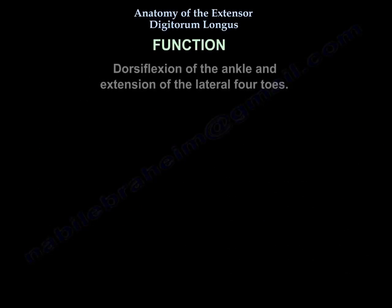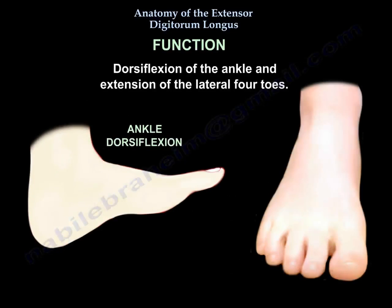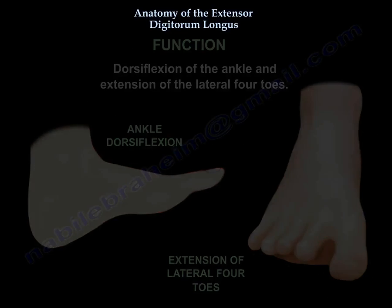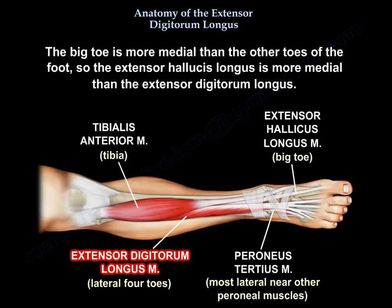The function of the extensor digitorum longus is dorsiflexion of the ankle and extension of the lateral four toes. The big toe is more medial than the other toes, so the extensor hallucis longus is positioned more medially than the extensor digitorum longus.